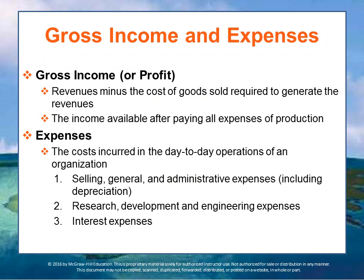Gross income or profit is revenues minus the cost of goods sold. If you don't have gross profit, you can't even have a store or run an operation — you can't pay utilities because you're not making enough money even to keep the doors of your business open. After gross profit, that's when you pay things like salespeople, accountants, rent, research and development, engineering new products or services, and interest. None of those things come before gross income or gross profit.